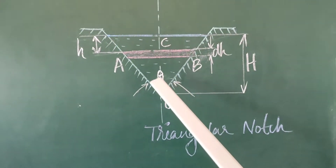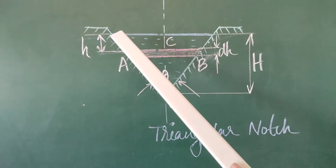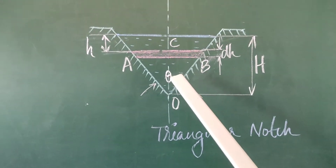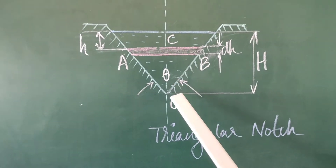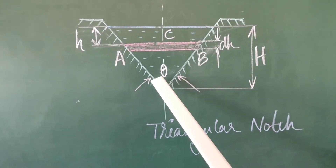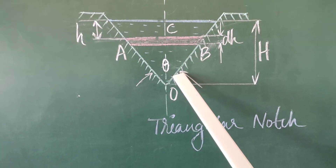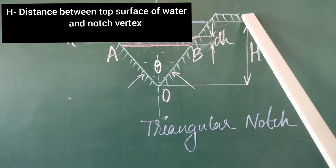We have a V-notch here. This is a V-shape, so the V-notch is a triangular notch. The angle of the notch is theta, and H is the height or depth of the notch.